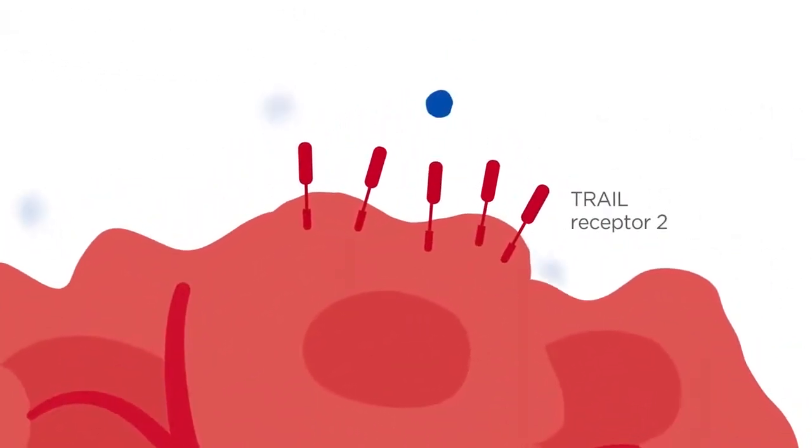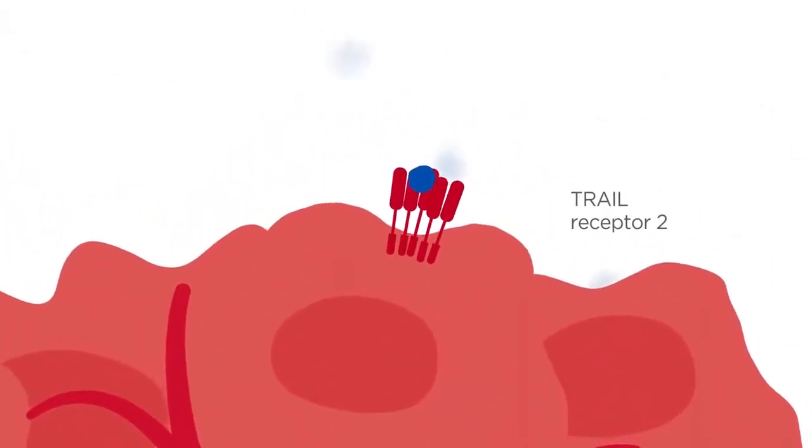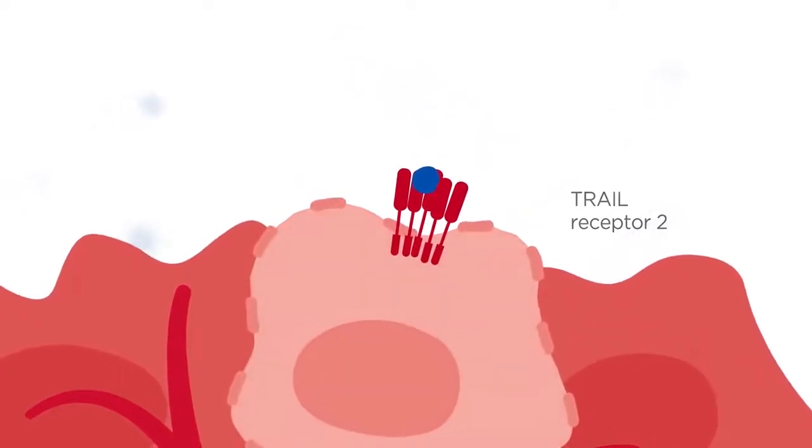Binding of the trail ligand causes the clustering of trail receptor 2, forming an activated death receptor complex.